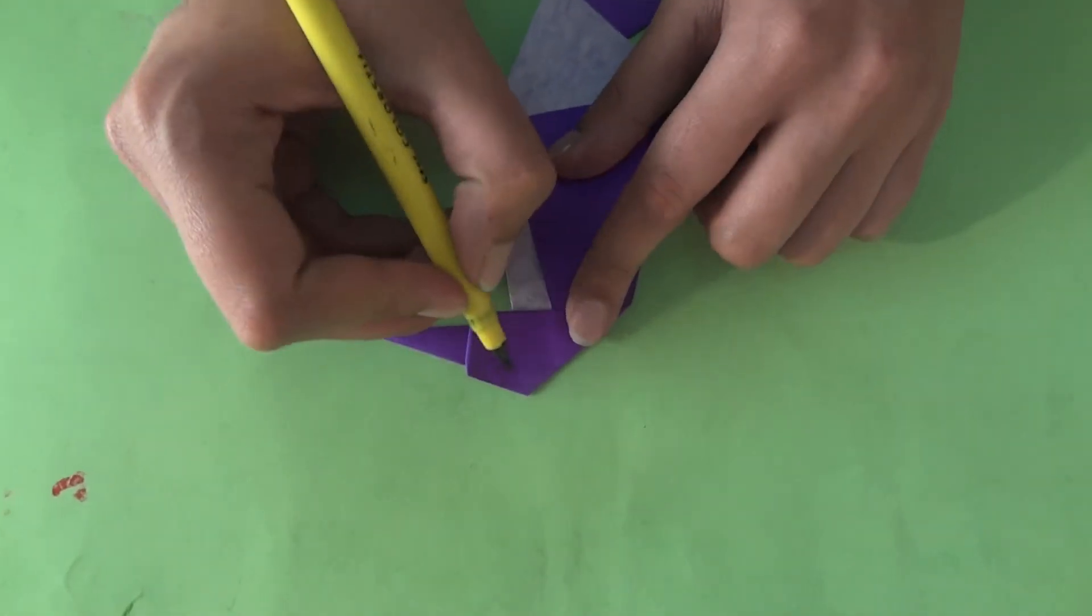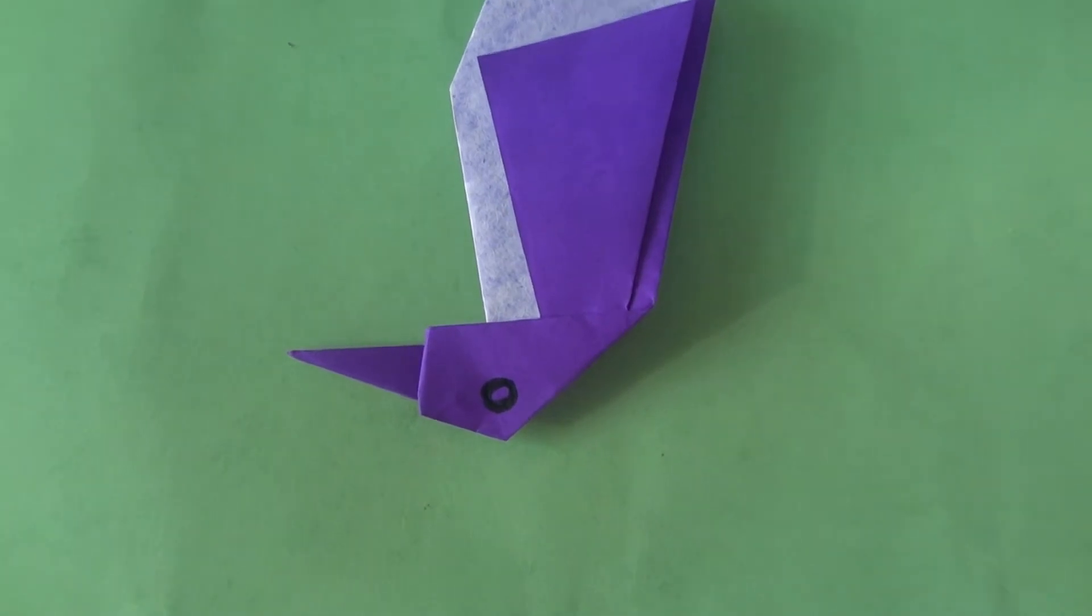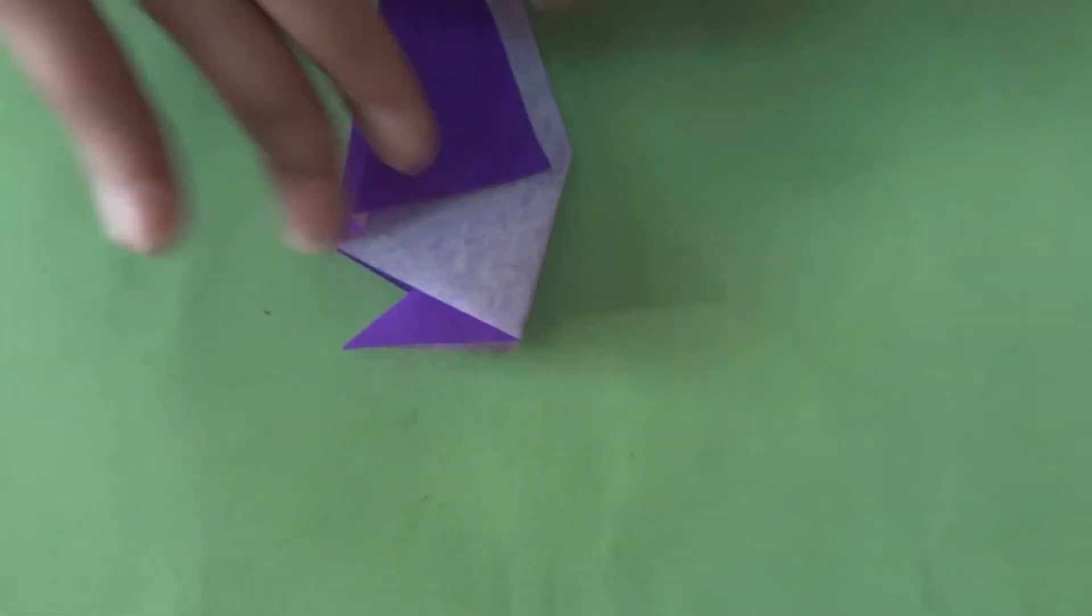Take a sketch pen and make the eye of the penguin. And your origami penguin is ready.